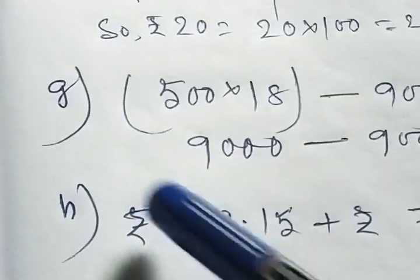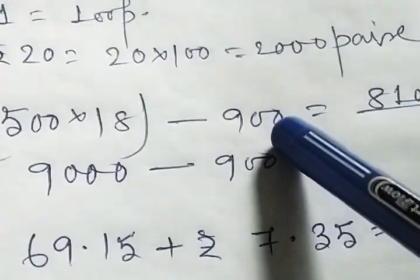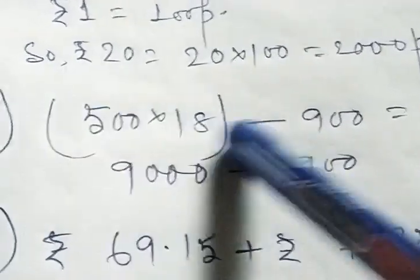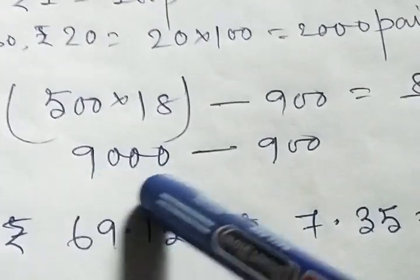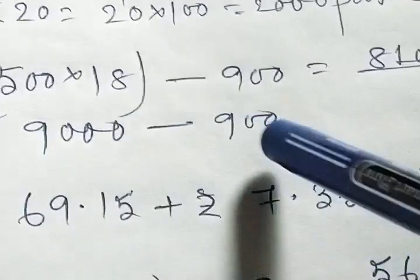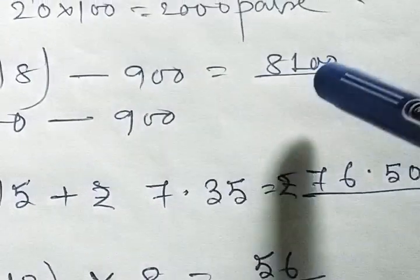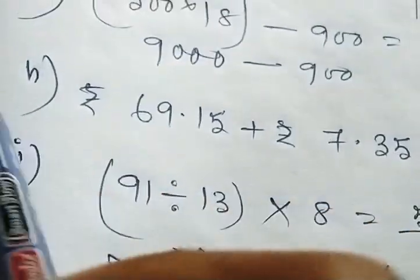Next number G. 500 multiply by 18 minus 900. So at first we will multiply, the number will be 9000. Same way, 9000 subtract 900, so answer will be 8100.